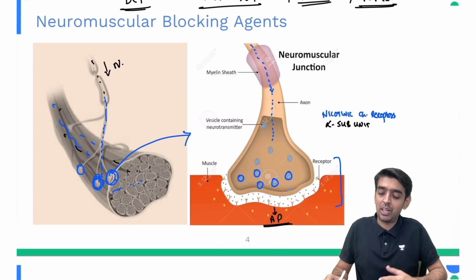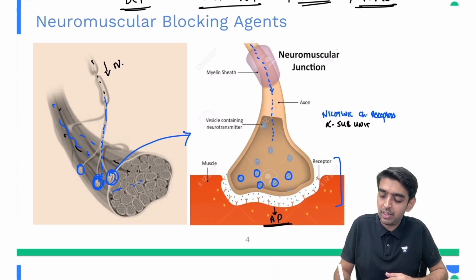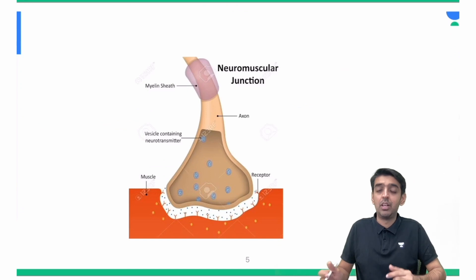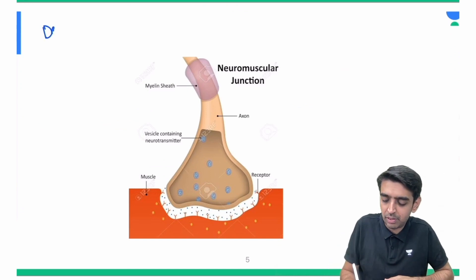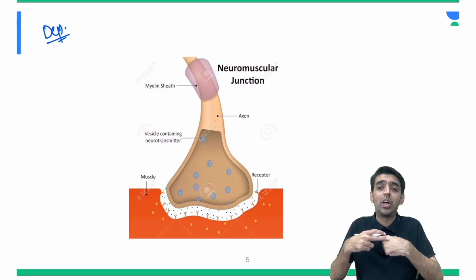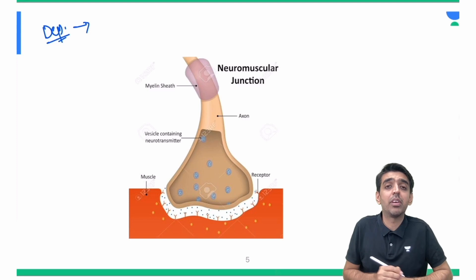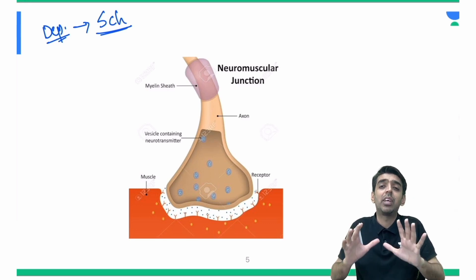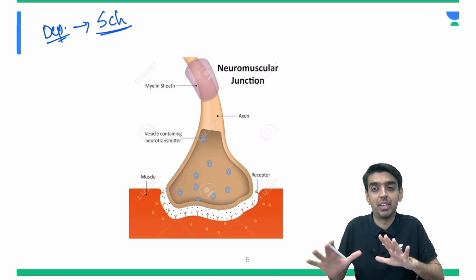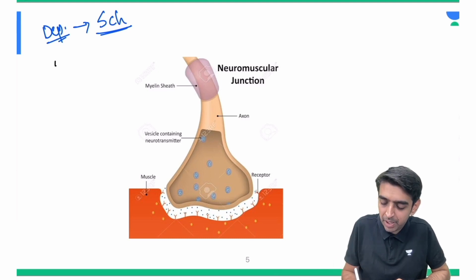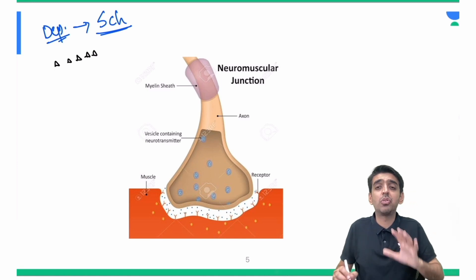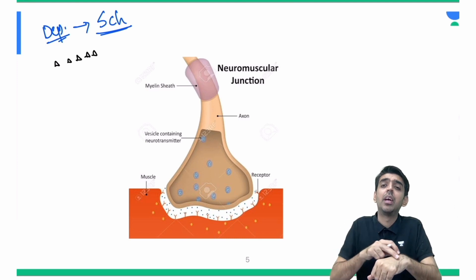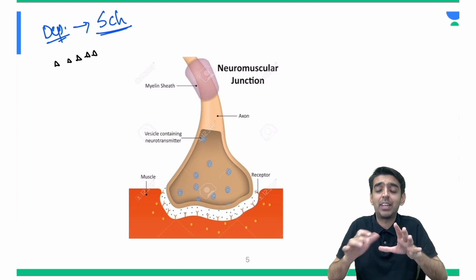Now let us look at depolarizing muscle relaxants. When we give neuromuscular blocking drugs — specifically depolarizing muscle relaxants — the best example is succinylcholine. It is given intravenously and travels to its primary target, the neuromuscular junction. I'll mark it in black in a triangular format to distinguish it from acetylcholine.